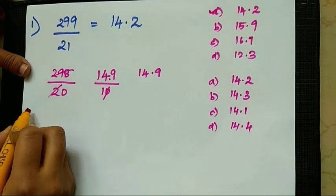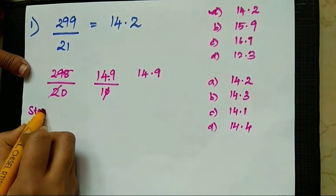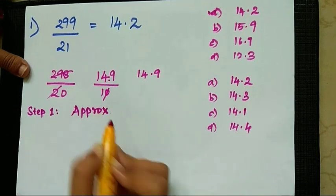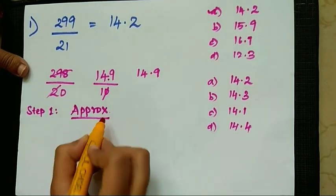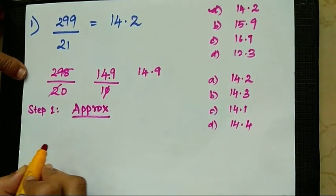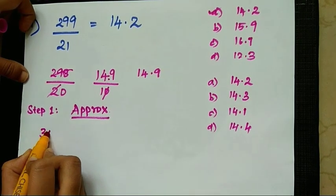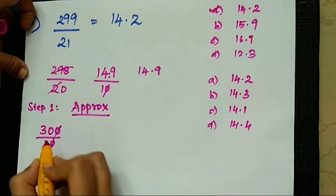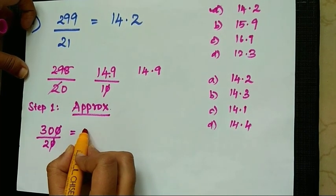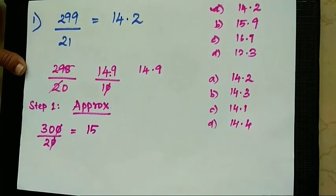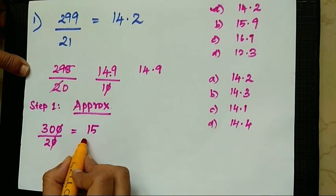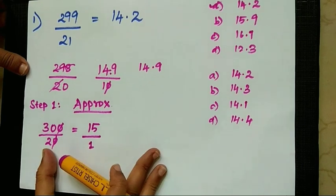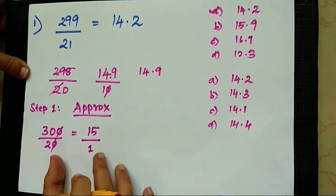So now we need a more precise approach. Step 1: Approximation. First, round the numbers to an approximate value. 299 by 21 — divide easily. So 300 by 20. Now this answer: 30 by 2 is 15. So 15 is our approximate answer.